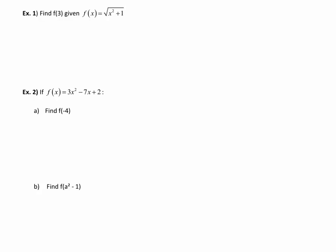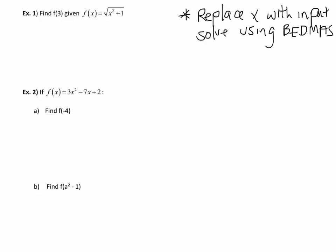So let's just run through a few examples. The first: f(3) given f(x) is equal to the square root of x squared plus 1. Now keep in mind for these what you want to do is replace all of the x values with your input. Once you've done this you're going to solve using BEDMAS. So this one here our input is x equals 3.